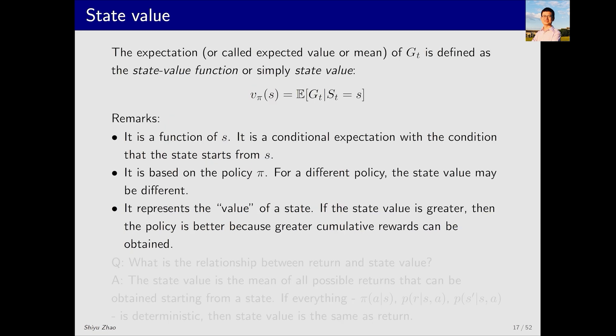After introducing the necessary symbols, we are now ready to formally define state value, which is actually quite simple. We know that G_t is the discounted return for a trajectory. What is state value? It is the expectation of G_t, which is also called expected value, mean, or average. Essentially these terms all denote the same quantity, the expectation.